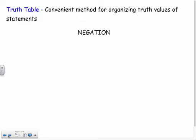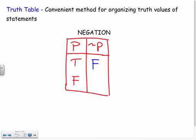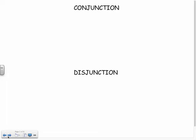Truth tables are a convenient method for organizing truth values of statements. Let's start with negation. P is either true or false — that's it. If p is true, not p is false; if p is false, not p is true. You just work down the rows — the negation is always the opposite of p. That's our general negation truth table.